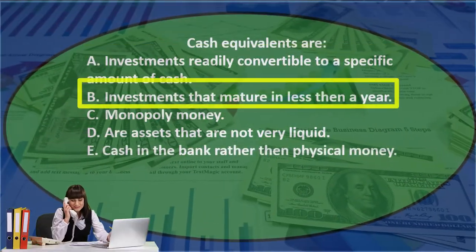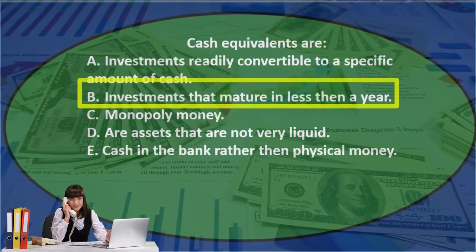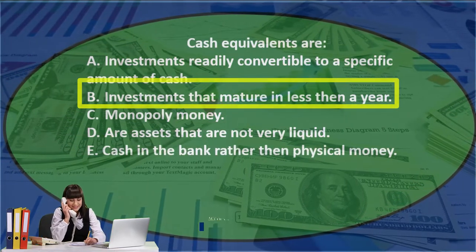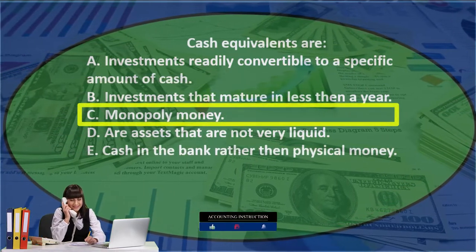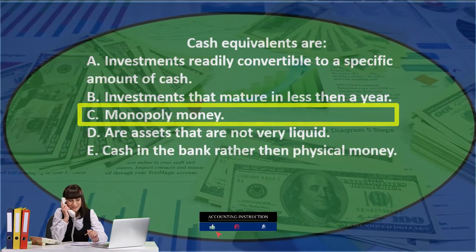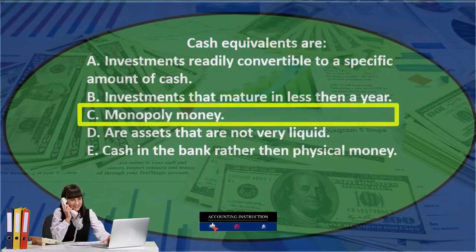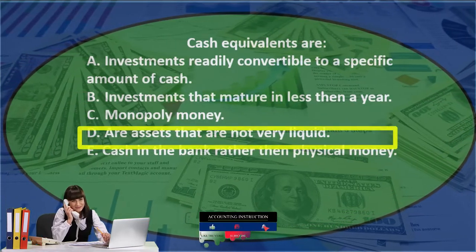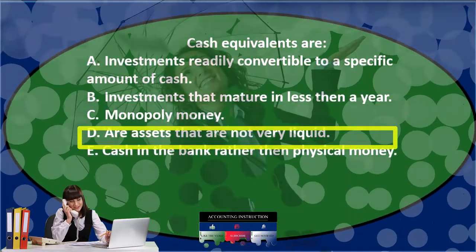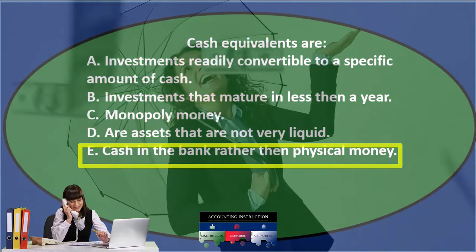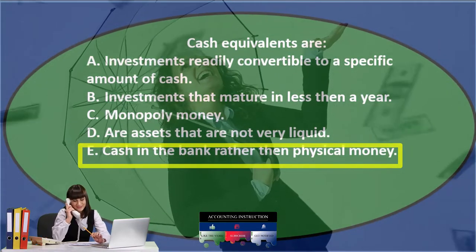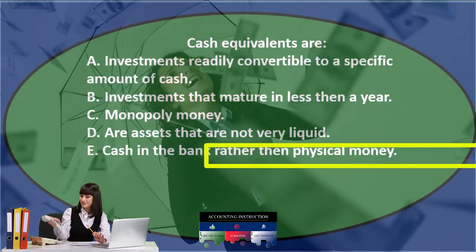B. Investments that mature in less than a year. C. Monopoly money. D. Are assets that are not very liquid. E. Cash in the bank rather than physical money.